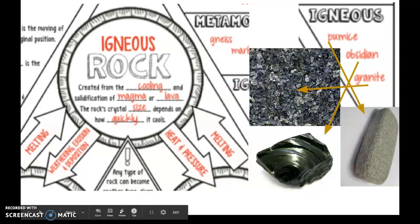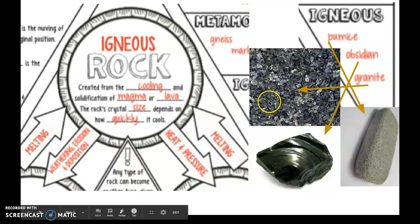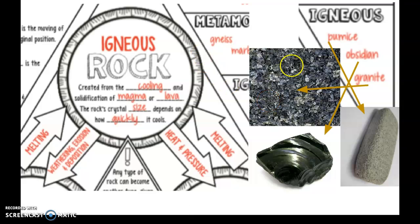Igneous rocks look all kinds of different. We've got obsidian right here, which is pretty beautiful and can actually be a gemstone if you cut it nicely. We've got pumice right here, and then granite right here, which might be what your countertop is made out of. The pumice doesn't have any crystals — those are holes in it, like what you would find if you scrub your feet. Granite you would find on a countertop.